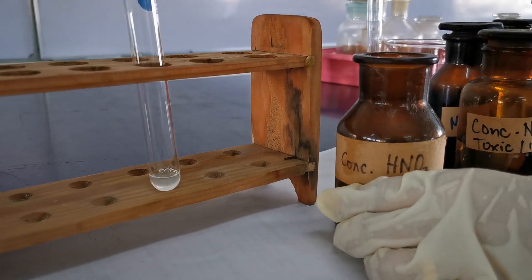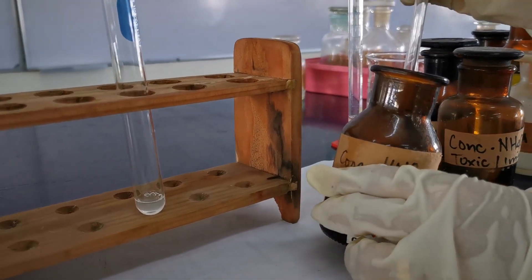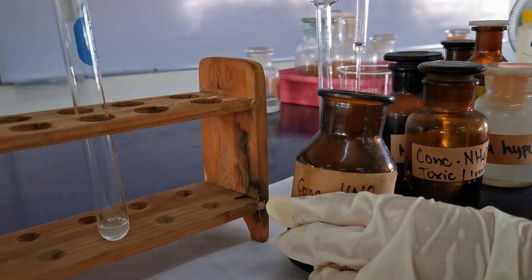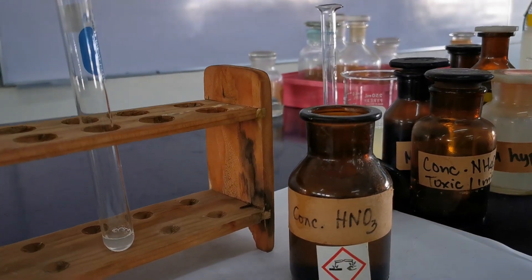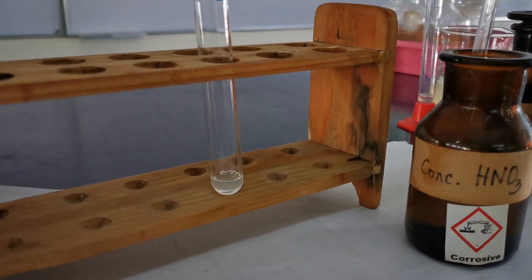Using the graduated cylinder, place 1 ml of egg albumin solution in a test tube and add 5 drops of concentrated nitric acid using the droppers.